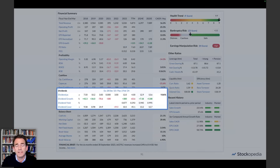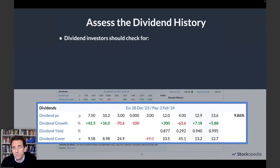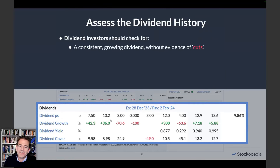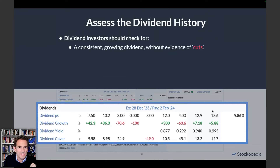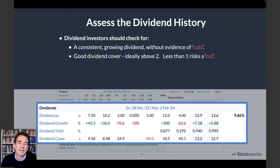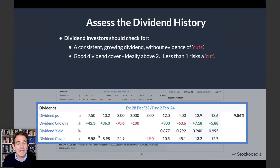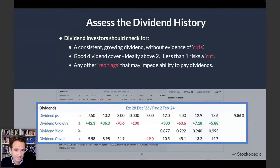If you're a dividend investor, this dividend section is really valuable. You should be checking for a consistent, growing dividend without evidence of dividend cuts. Jet2's dividend was cut from around 7.5–10p down to zero during the pandemic, and it's been trying to claw it back — brokers are forecasting it will get well above what it was. Generally, people look at dividend cover — how many times the dividend payments are covered by the company's profits. For Jet2, it had really good dividend cover until it didn't. Generally, you want to see at least two times dividend cover — less than one definitely risks a cut. Beware other red flags when looking at dividends, and look for high-quality companies.